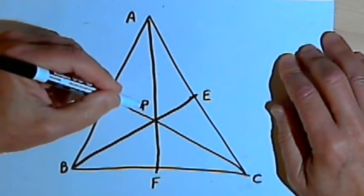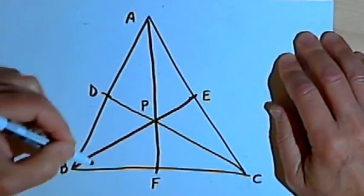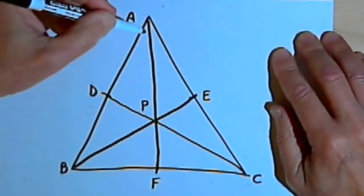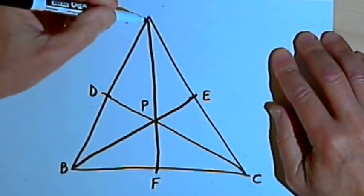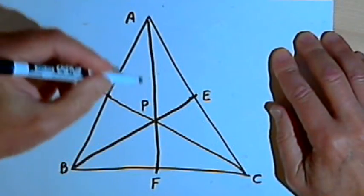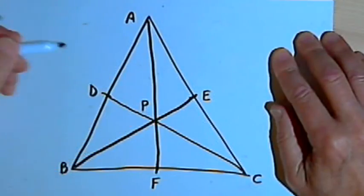There's some interesting things about a centroid. If I do this very accurately, and I draw it on a piece of stiff material, like maybe a piece of cardboard, and I cut the triangle out, then it would balance perfectly on point P. It would balance perfectly on the centroid.